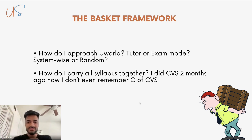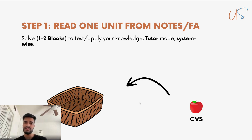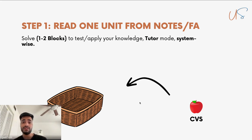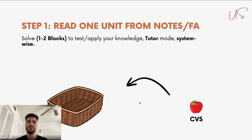This is where the basket framework comes in. It's very simple. Step one: just read one unit from your notes or First Aid. If you're doing Step 1 it will be FA first; if you're preparing for Step 2 CK it will be the pre-made notes or the Anki deck for that particular unit. Let's take CVS. So you go through the notes and prime yourself with all the information in the CVS unit. Then you go to UWorld and solve one to two blocks of that particular unit — CVS.